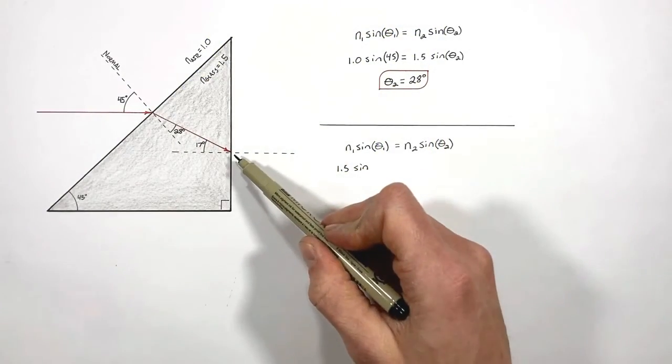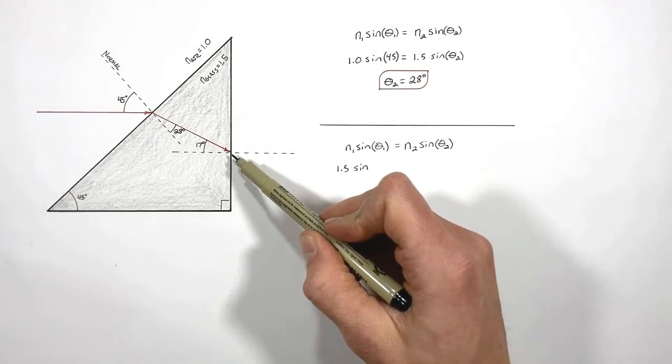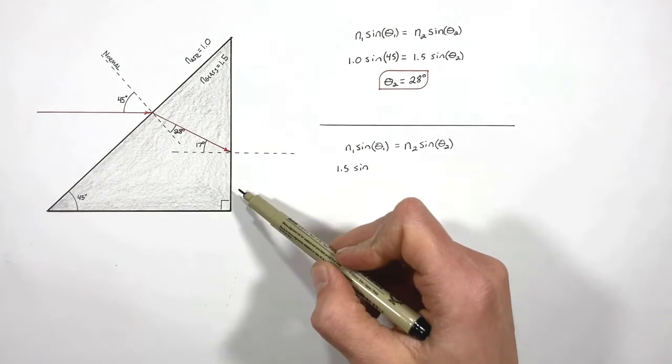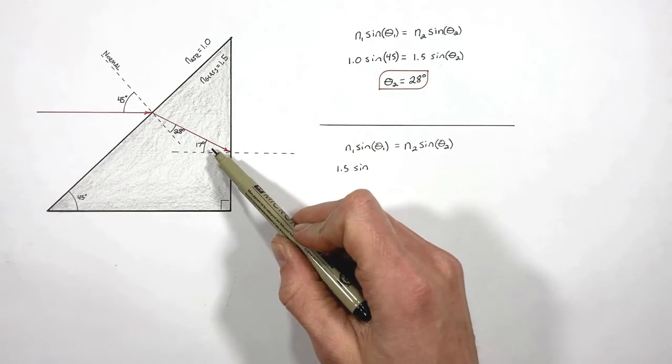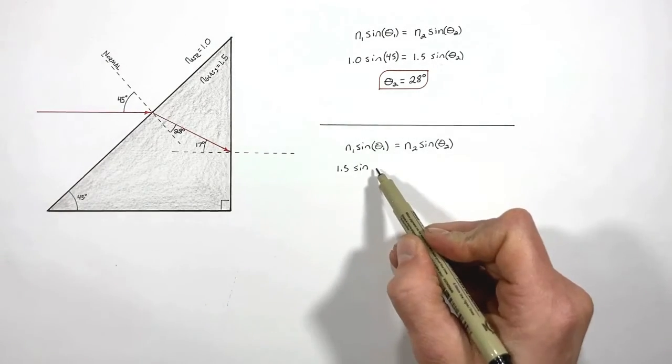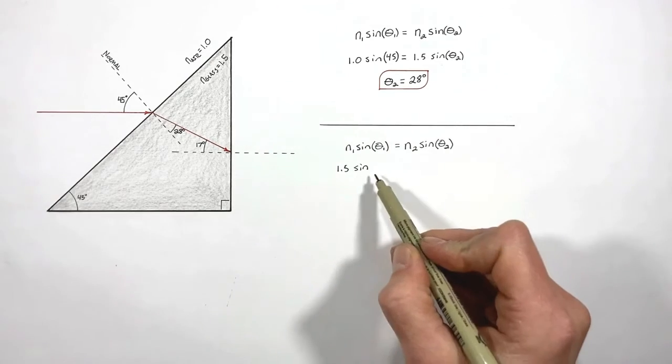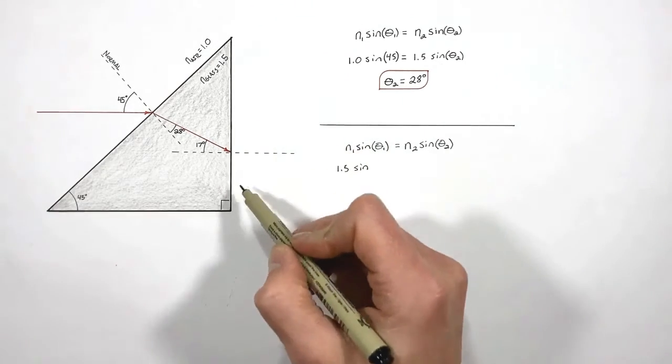Now if you work through the geometry for this ray traveling through the prism, you'll find the ray strikes the edge of the prism at an angle of 17 degrees relative to the normal. And that's the angle we're going to use right here, the angle of incidence against this boundary.